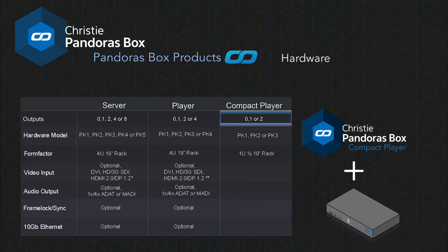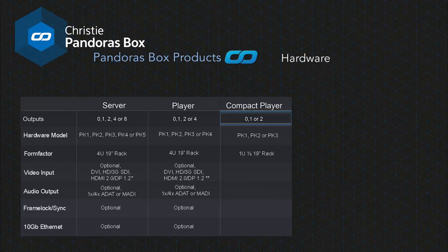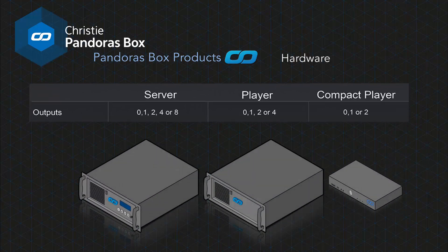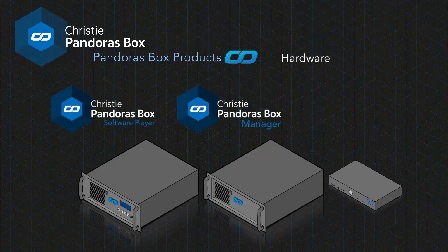If the no-output option is selected, you won't get a Pandora's Box license with that machine. The no-output option is useful when you don't want the related license, but still want to use pre-configured Christie hardware with another Christie software product, or if you want to update old hardware without purchasing a new license. You can get server, player, or compact player hardware with no outputs and combine it with either the software player license or one of the manager licenses, or even the Widget Designer show control software.